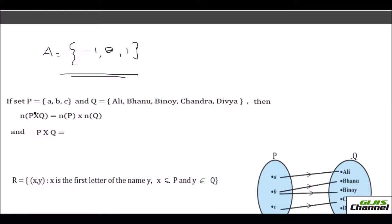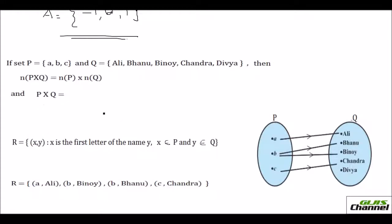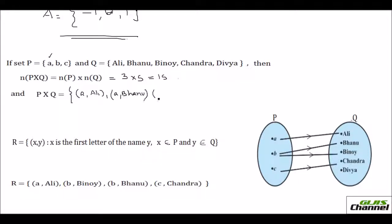You have set P as {A, B, C} and another set Q with some names: Ali, Banu, Binoy, Chandra, Divya. The number of elements in P cross Q equals number in P times number in Q, so 3 times 5 gives 15 ordered pairs. P cross Q starts with (A, Ali), (A, Banu), (A, Binoy), (A, Chandra), (A, Divya), likewise for B and C as well.